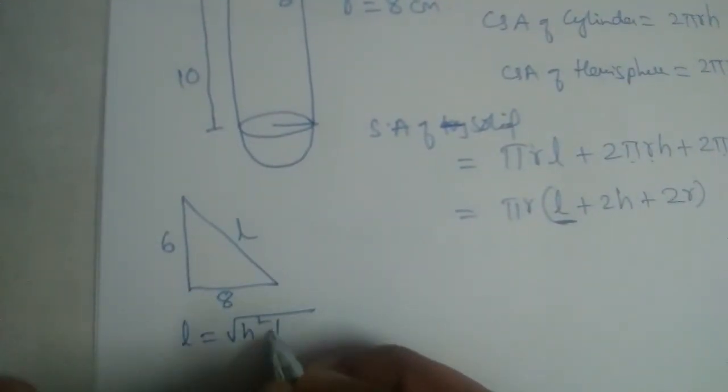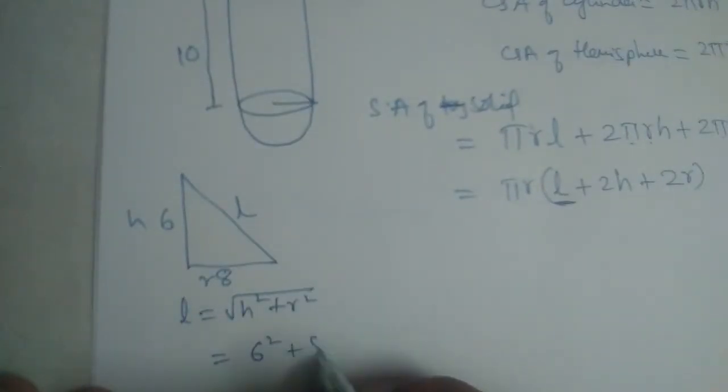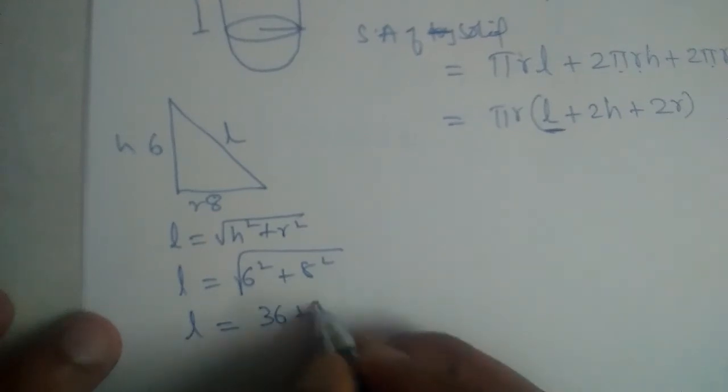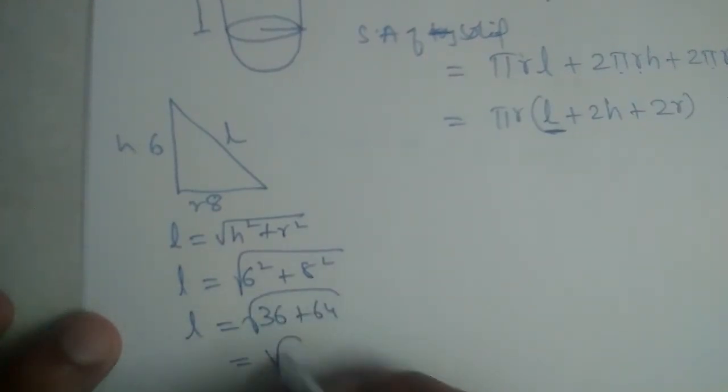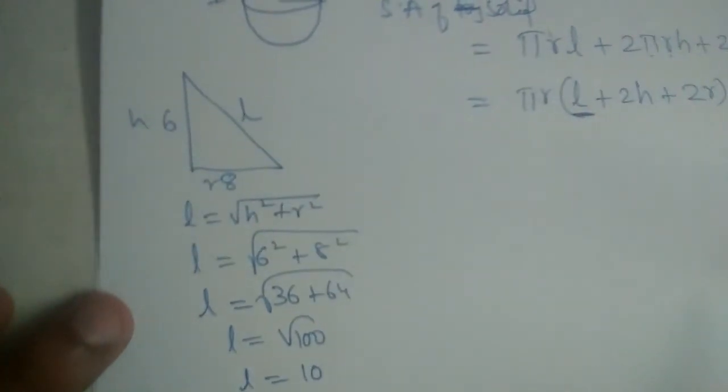It will give us 6² plus 8². L will be equal to √(36 plus 64), root 100. So L will be equal to 10.